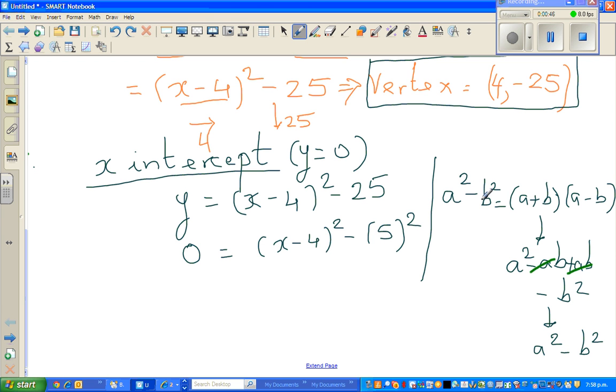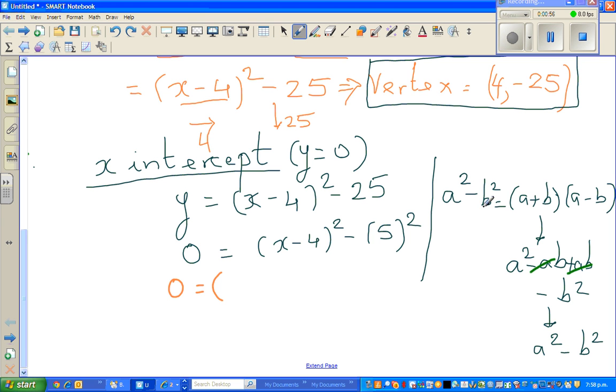Now I'm going to use this formula of a squared minus b squared to factorize this. Can I write 0 equals a squared minus b squared is a plus b times a minus b. You can compare a with x minus 4 and b with 5. Instead of writing a plus b, I can write x minus 4 plus 5, and instead of a minus b, x minus 4 minus 5.